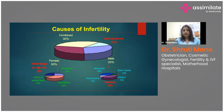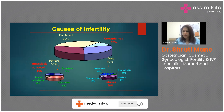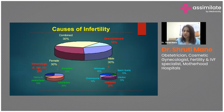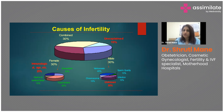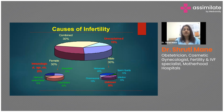Regarding the causes of infertility: female factor causes contribute to about 30% of cases, male factor contributes to about 30%, unexplained infertility — where there is no identifiable reason — constitutes about 10%, and combined causes (where both the male and female have problems) account for about 30% of cases.